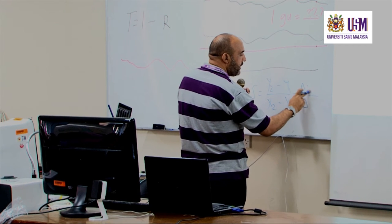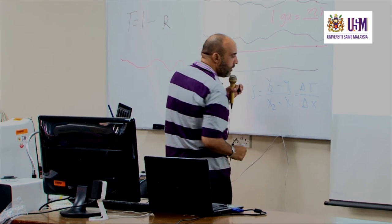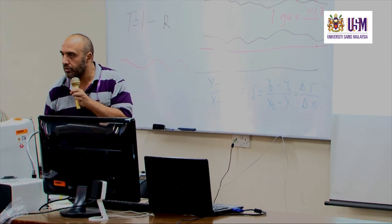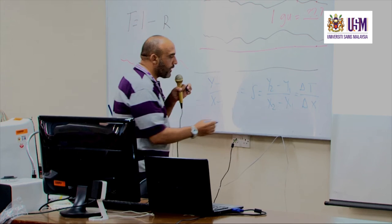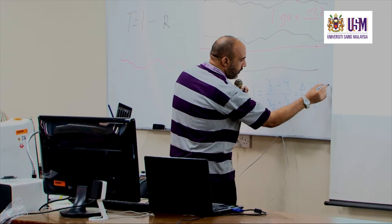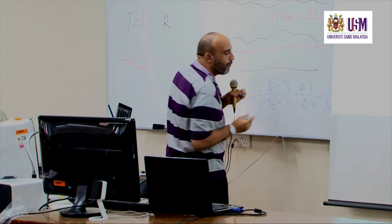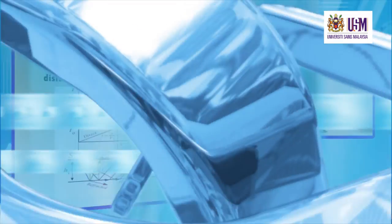In our case, the slope is delta T divided by delta X, which is the reciprocal of velocity.